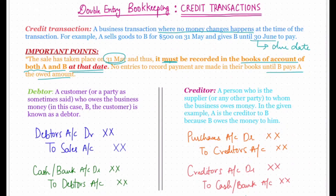A debtor is a customer, or a party, who owes the business money. In this case, B the customer is known as the debtor. The transactions related to the debtor arise at the time of sale. Therefore, the entry will be: Debtors Account debit, to Sales Account. Debtors Account is debited as per the rule of personal account — debit the receiver — as the debtor is the receiver of the goods.